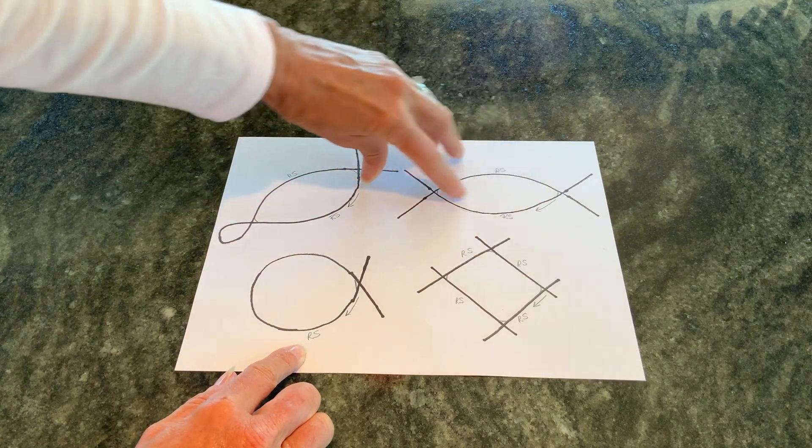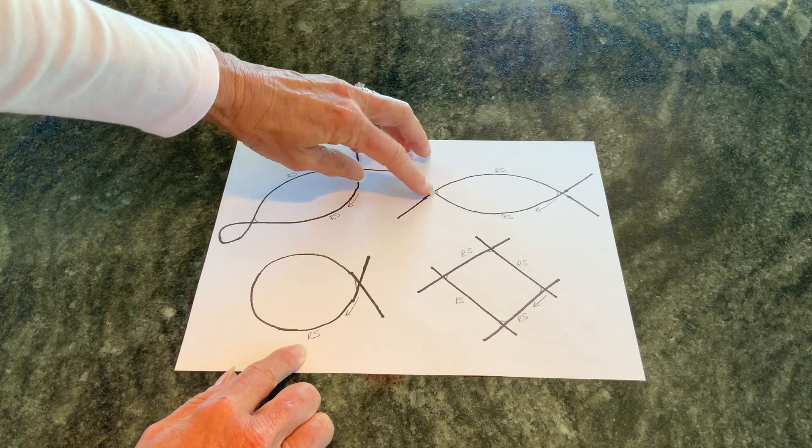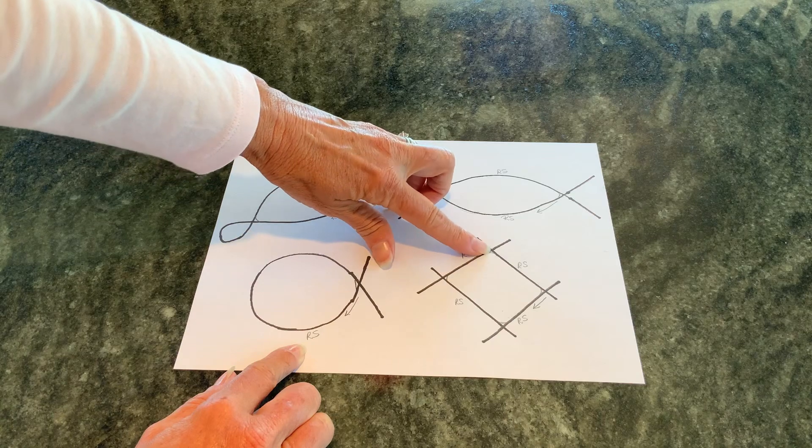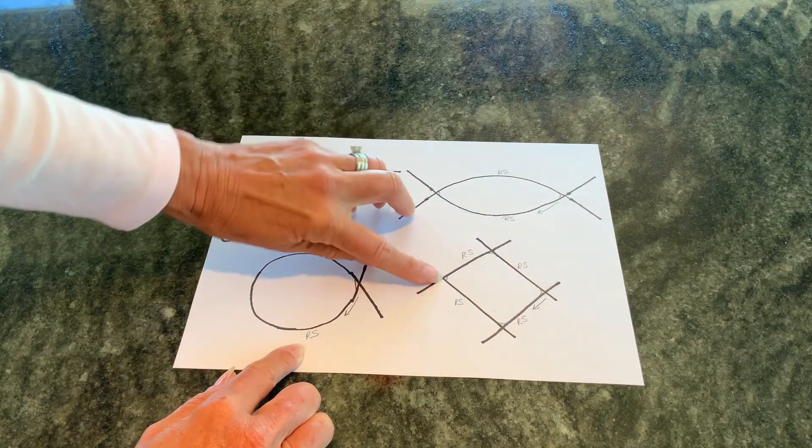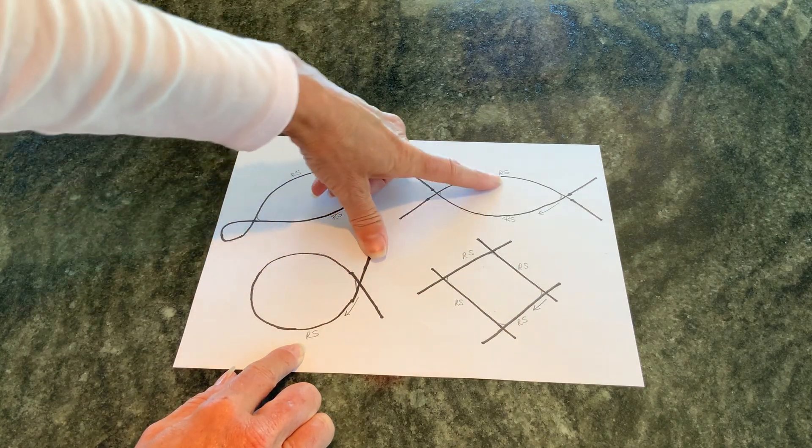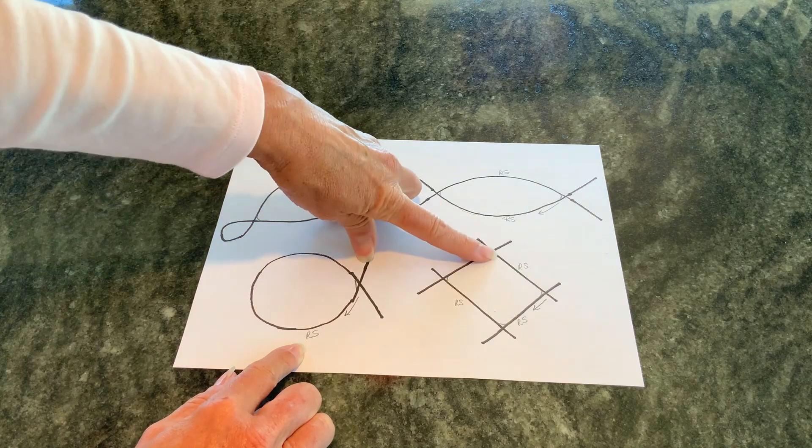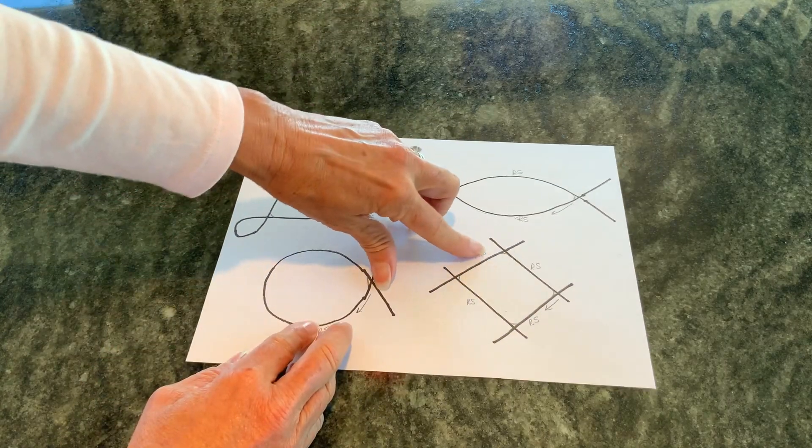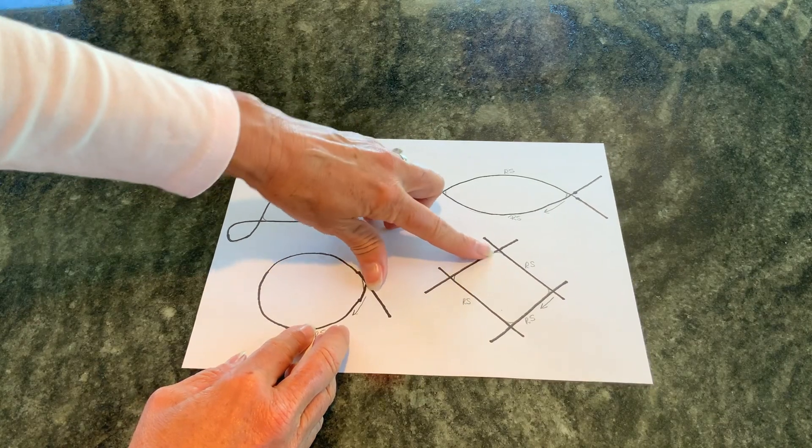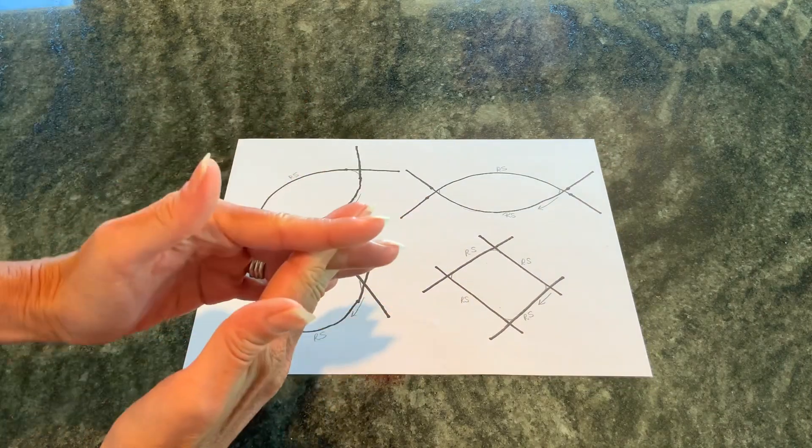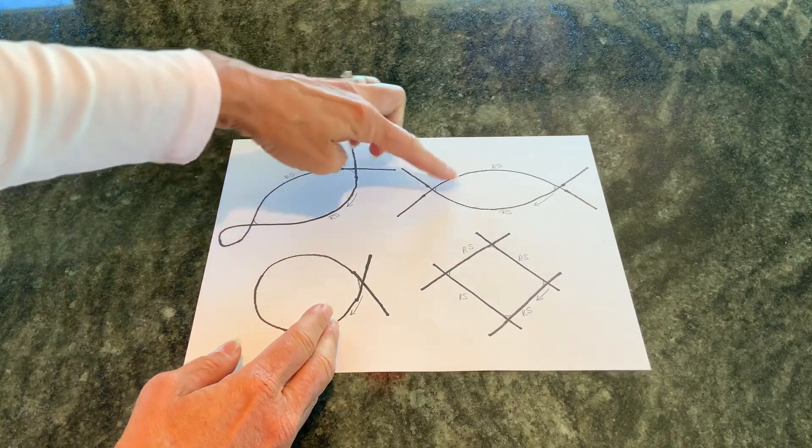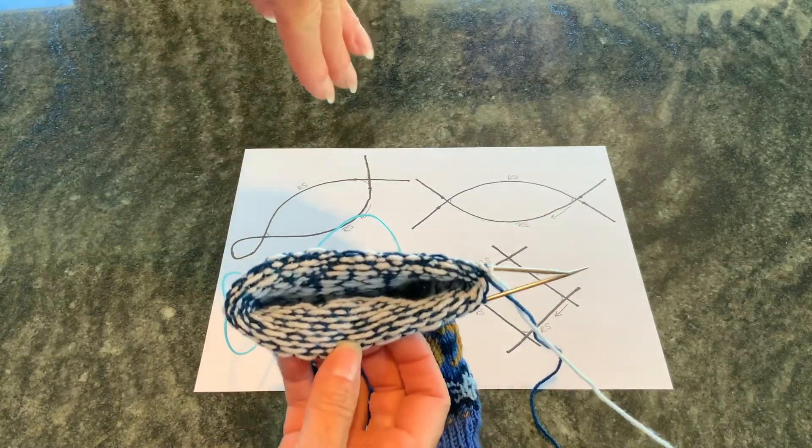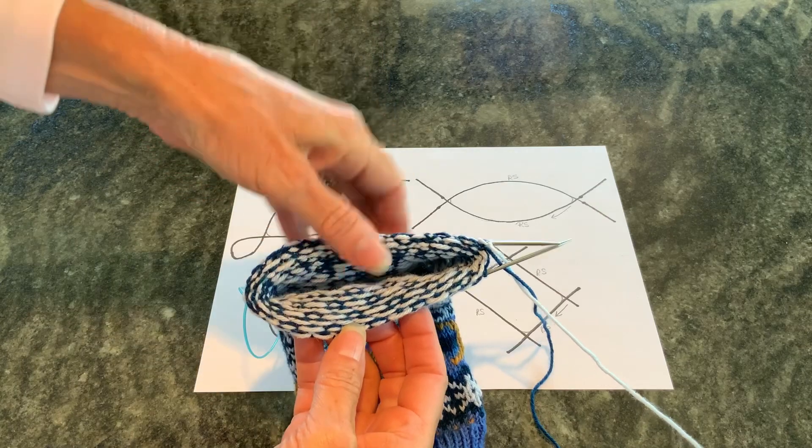On magic loop, you've got one where the needles are and one where the loop is. On two circs, you've got a little gap here and a little gap here. And then on four DPNs, you've got four gaps, but they're not quite as bad as the ones on the two circs because you've got a more open space between your needles here.